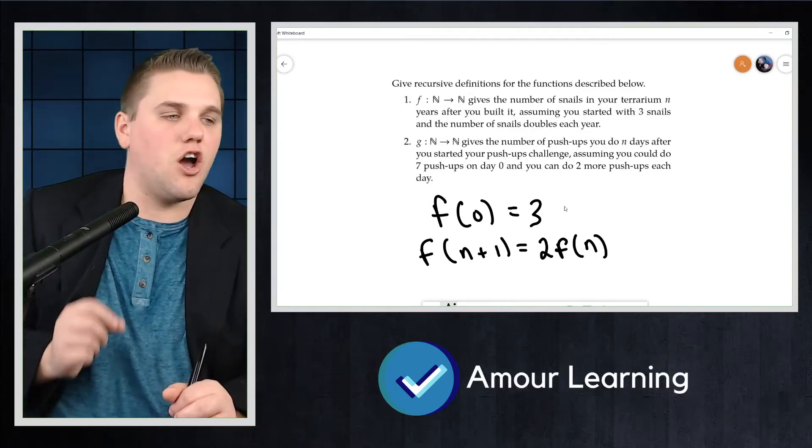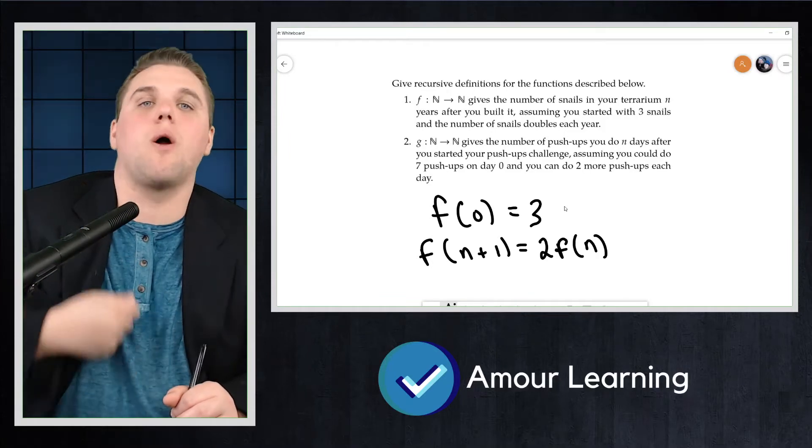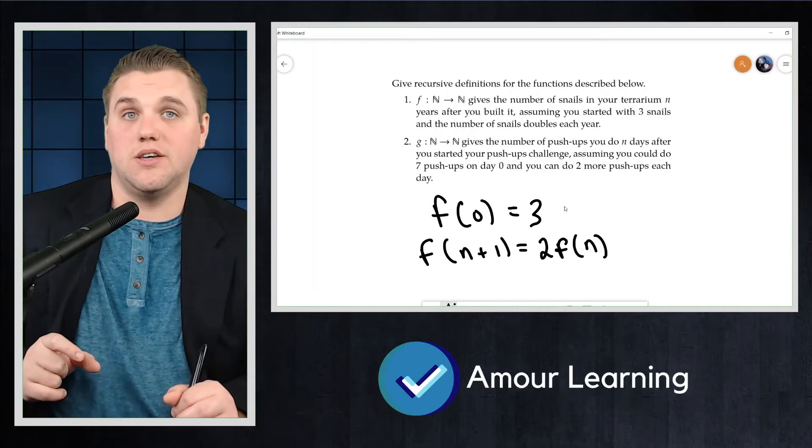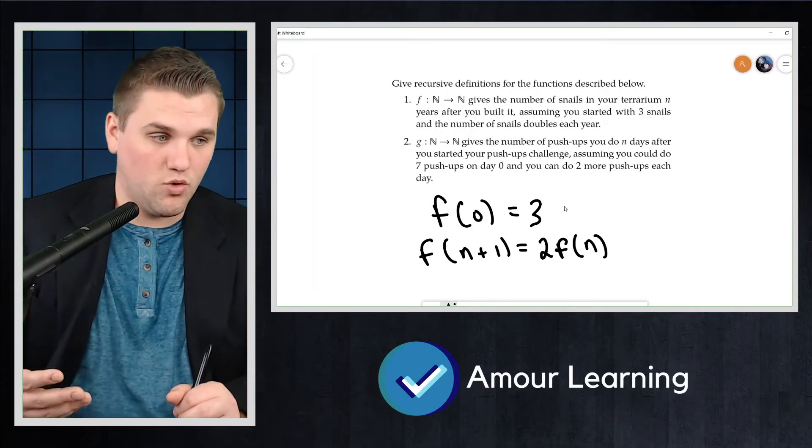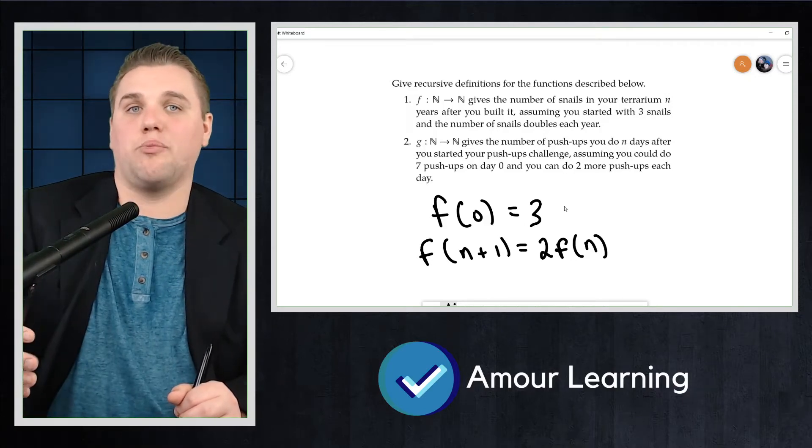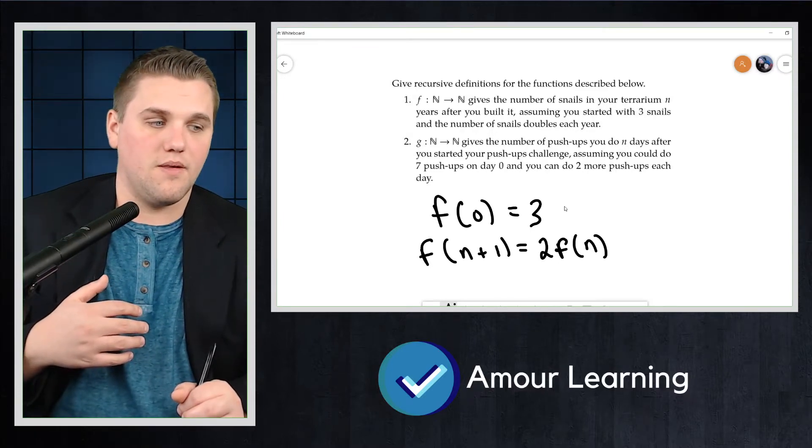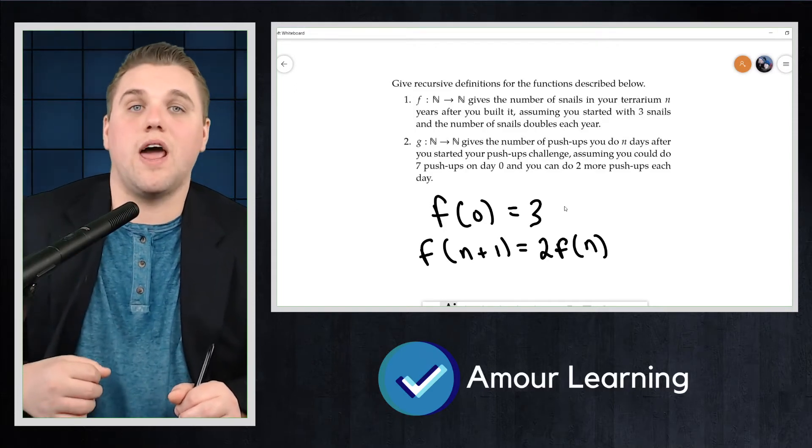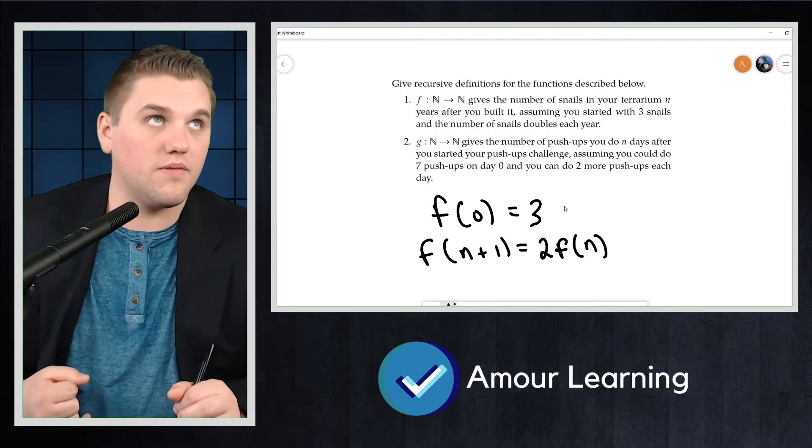For example, if I want to know how many snails I'd have after one year, I would take 3 and multiply it by 2. Then I would take that element, which is f(1), which would be 6. We would have 6 snails after one year. And to get to my next output, I would just plug in my 6 to get 12, and then I would plug in 12 to get 24.